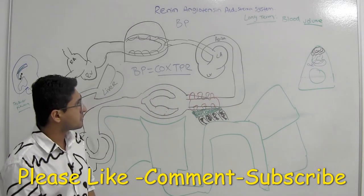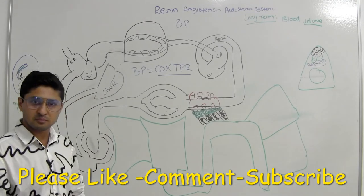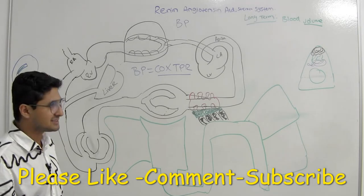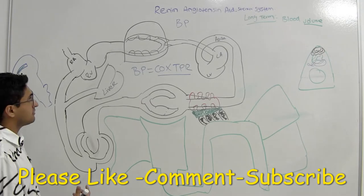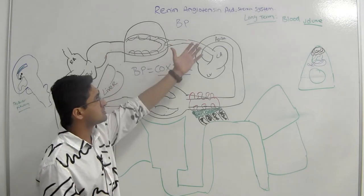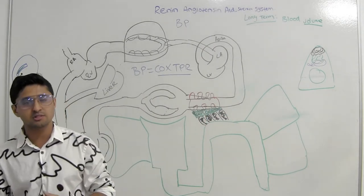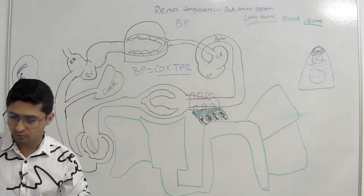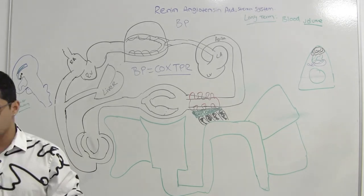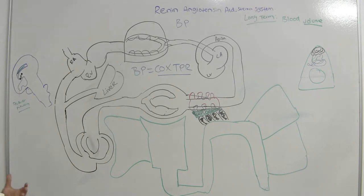We're going to continue our lectures and talk about blood pressures — specifically how to increase blood pressure in the long term. This involves the pathway called the renin-angiotensin-aldosterone system. This is a long-term, slow change that occurs over a period of days, weeks, or months, involving increases or decreases in the physical sizes and number of blood vessels.